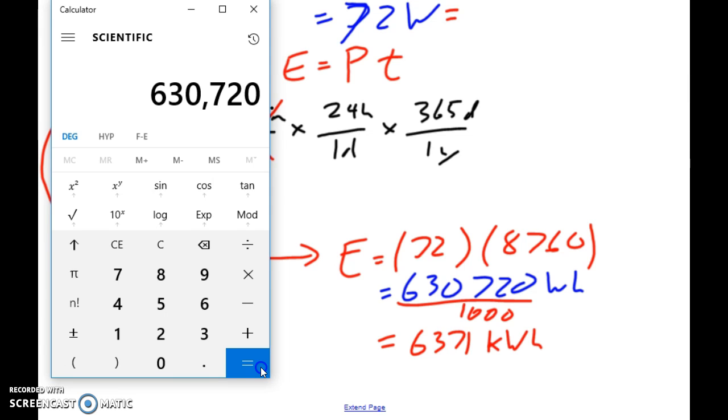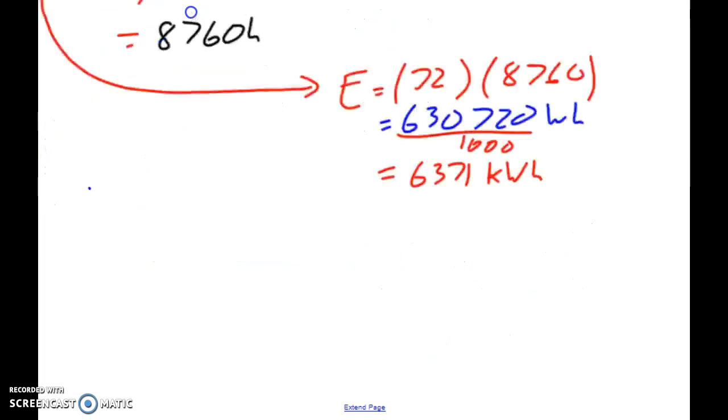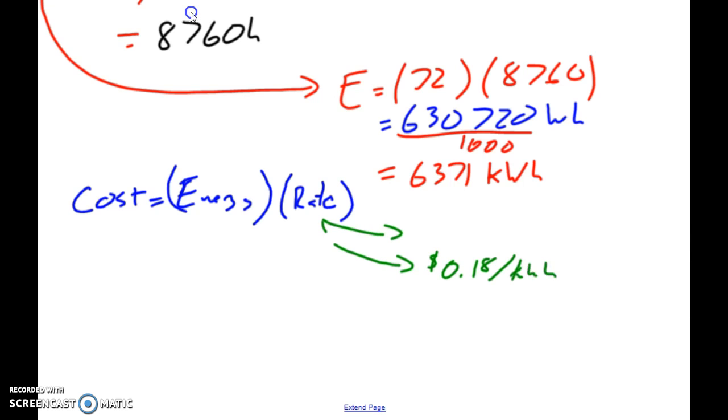So our last thing we're going to do is we're going to talk about cost. The cost is equal to energy times rate. Now energy rates in Ontario, they vary. At the high end you're looking at about 0.18 cents per kilowatt hour. At the low end you're looking at about 0.08 cents per kilowatt hour. So just for argument's sake let's just put it in the middle. We're going to call it 13 cents per kilowatt hour. So if we plug those numbers in, so 6371 and we multiply that by 0.13, and that ends up with a number of 828 dollars and 23 cents.